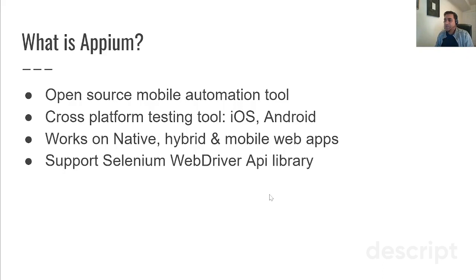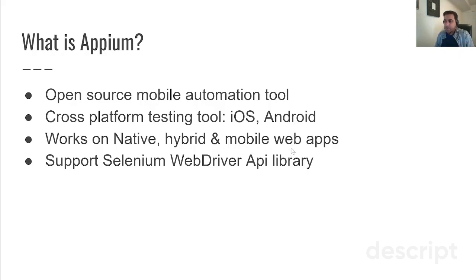Appium works on native, hybrid, and mobile web apps. A native app is built purely on the mobile platform. A hybrid app is built on the mobile platform but also supports a web view — meaning web is embedded inside the mobile view — so it's a combination of mobile and web. And a mobile web app works only on the web view, like through a browser such as Chrome on your mobile device.